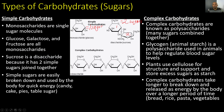On to complex carbohydrates, which are known as polysaccharides, or many sugars combined together. Notice that there are many carbohydrates joined or bonded together, and that's what takes our body longer to digest these complex carbohydrates — because there are so many bonds that must be broken down. Glycogen is animal starch, a polysaccharide used in animals to help regulate blood sugar. Plants use cellulose for structure and support and store excess sugars as starch. Complex carbohydrates take longer to break down and are released as energy by the body over a longer period of time.